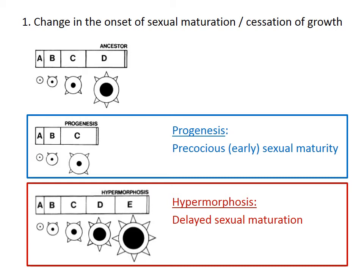If sexual maturity is delayed, this is called hypermorphosis, and the adult of the descendant has gone beyond the ancestor. The adult is stage E, which is not observed at all in the ancestor. Therefore, this is an example of peramorphosis caused by delayed sexual maturation.